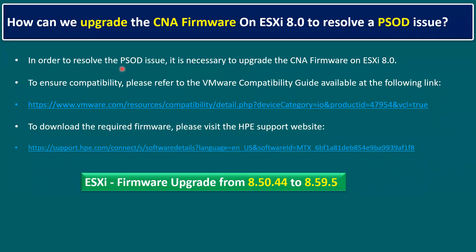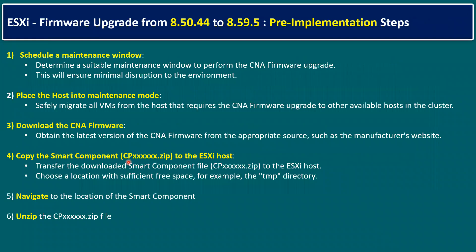We've reviewed both the VMware Compatibility Guide and the HPE support article. Now, for the HPE ESXi server CNA firmware upgrade from 8.50 to 8.59, here are the pre-implementation steps. There are six main steps, though some organizations may have additional ones. The first step is to schedule a maintenance window — firmware upgrades are recommended during non-business hours to ensure minimal disruption to the production environment.